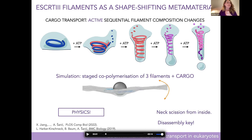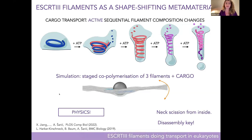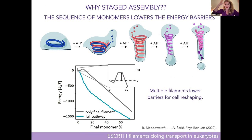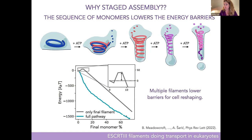You might wonder: why would nature bother having all these different filaments? If you have a tight one, why not just put that on the membrane and constrict directly? You can test that in simulations. When you take the full pathway — multiple filaments replacing each other — the energy for deformation goes smoothly downhill. However, if you just put the last filament on, there's a huge barrier: you'd need to change the membrane from flat to a very tight neck in a single step. The multiple steps serve to lower the barrier and enable the process to occur in finite time.